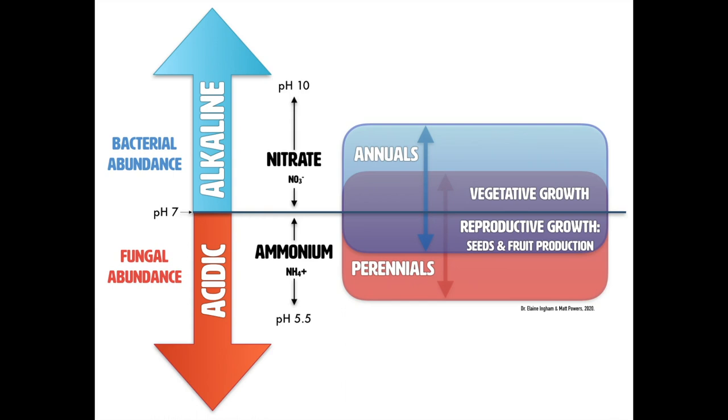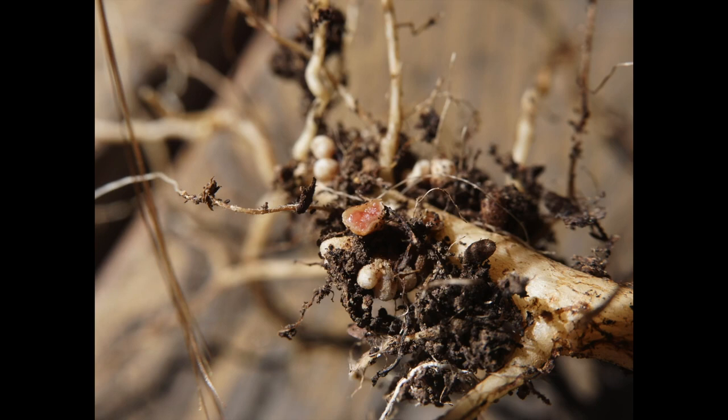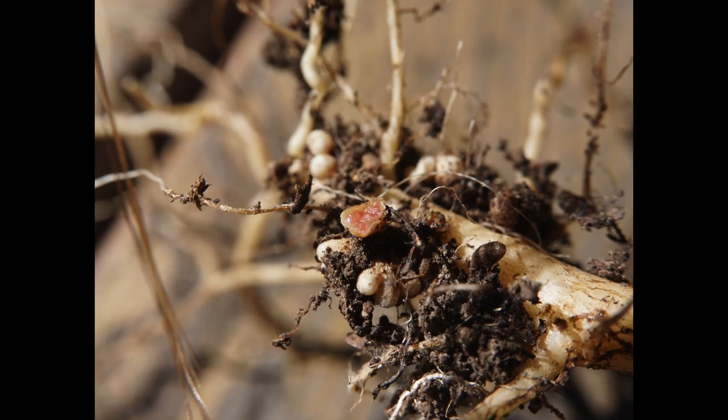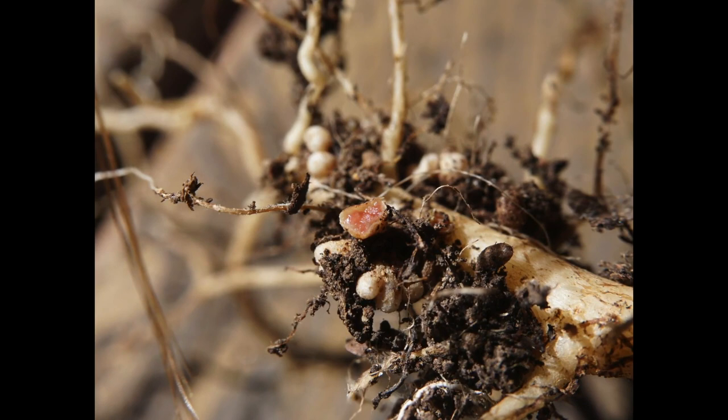There are free-living microbes that fix nitrogen. There's also rhizobia, which will form a nodule on a root, hide from oxygen, and fix nitrogen there — making a really acidic, really reduced environment. It really depends on where you are and the kind of plant you're working with.